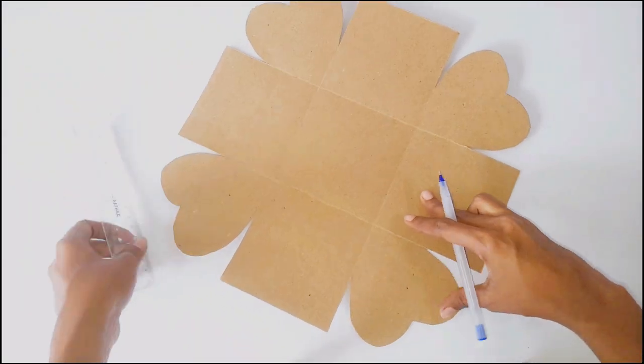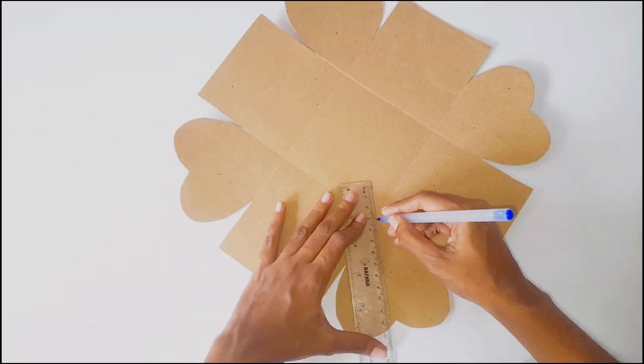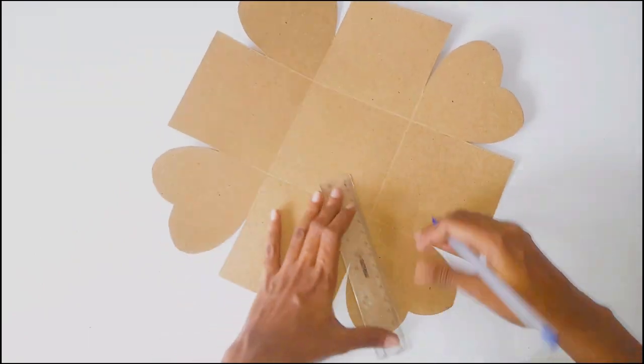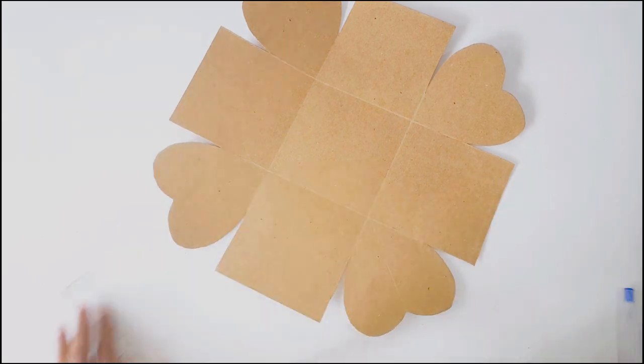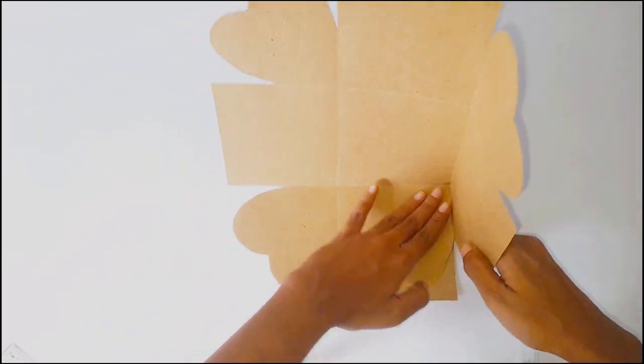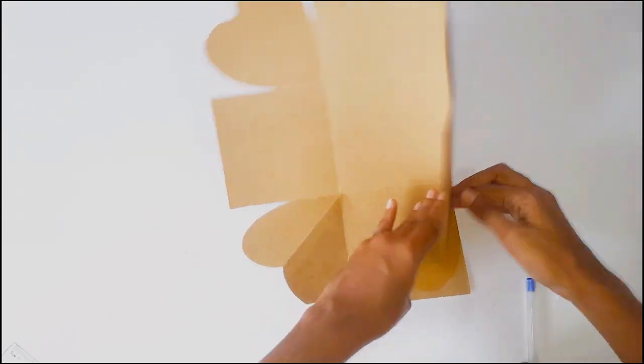Now I get an inkless pen and crease like this. Then I fold the box template along these lines.